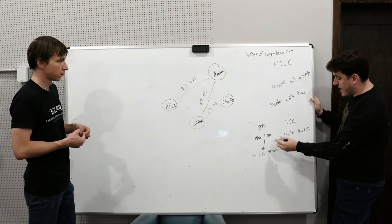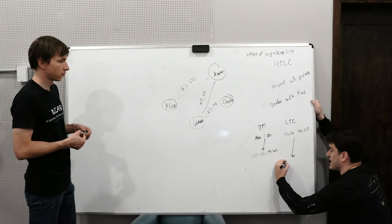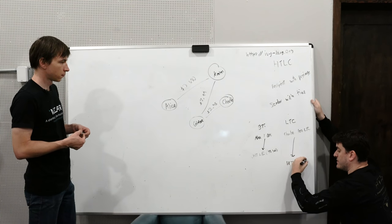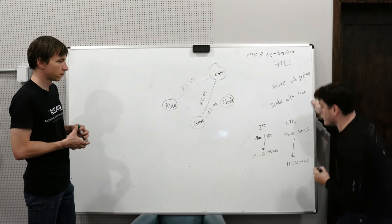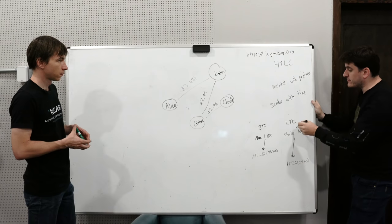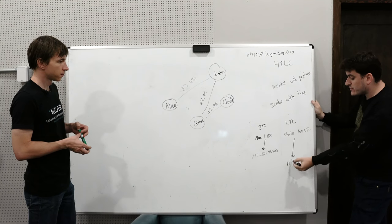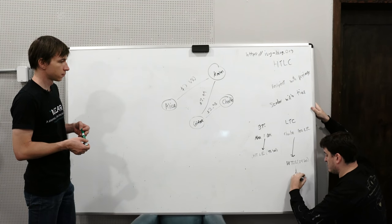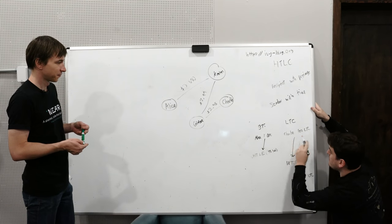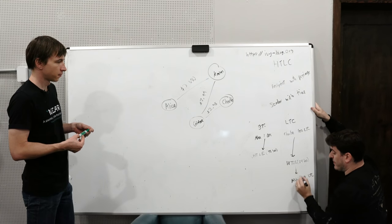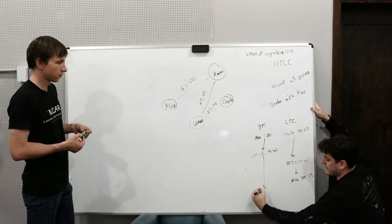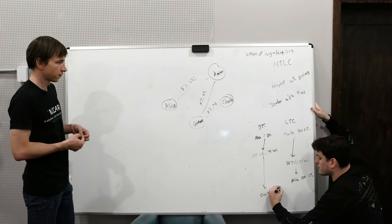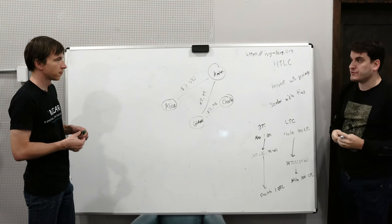In this matching HTLC, Charlie is the sender and Alice is the recipient. Alice sees this, now she can unlock it within 24 hours and she gets the Litecoin. Charlie, by seeing this transaction on-chain, learns the pre-image and can unlock Alice's HTLC to receive the Bitcoin. That is a very old protocol for atomic cross-chain swaps and it works on-chain. The innovation of the Lightning Network was to embed these within payment channels.